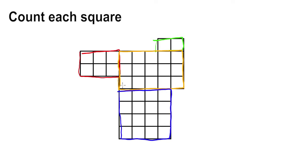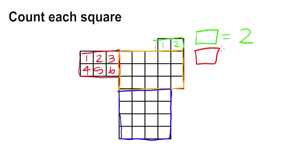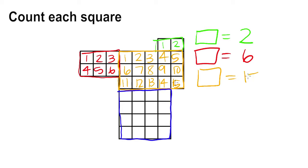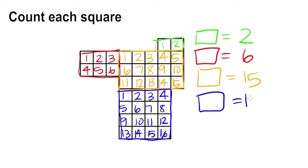For this rectilinear figure, I'm going to count each square. The green rectangle has an area of 2. The red rectangle has an area of 6. The orange rectangle has an area of 15. The blue rectangle has an area of 16.